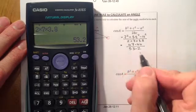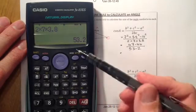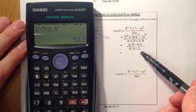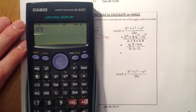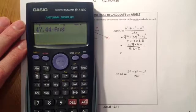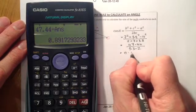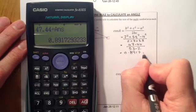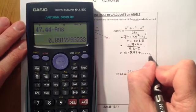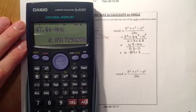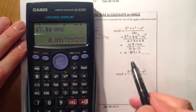That gives me on the denominator 53.2. We'll just divide these numbers out. If I go for 47.44 divided by that answer I had in, that should give me 0.8917 and some more characters beyond that. That gives me an answer for cosine of A.